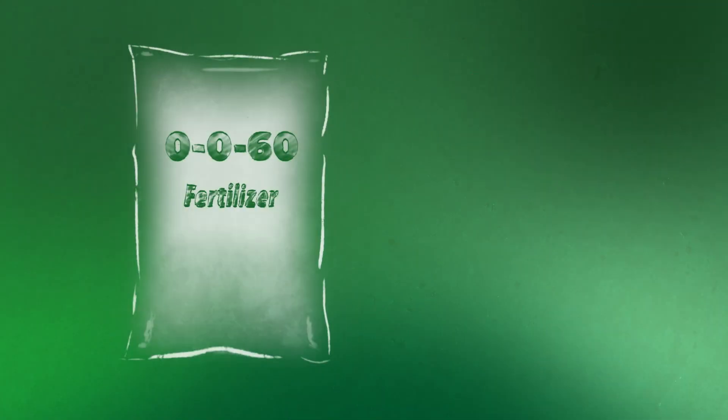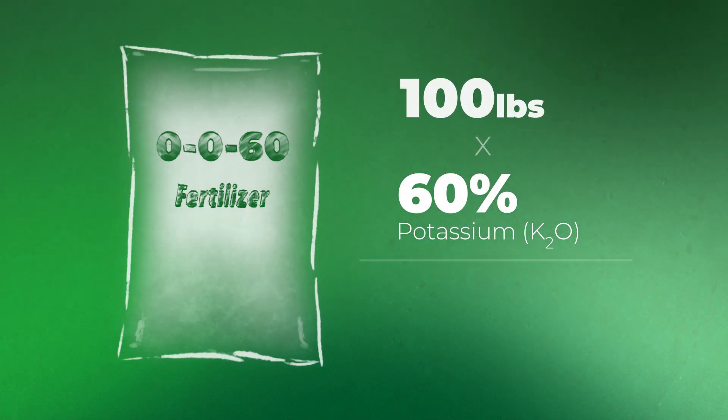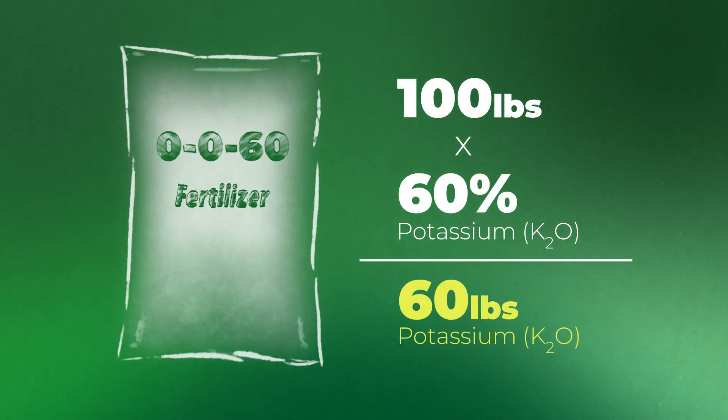In that example, there was no potassium — I used 11-52-0. What if I needed some potassium in my program? For example, if I used a 0-0-60, we're going to go through the exact same process. Using 100 pounds as an example, because that makes for easy math, we take that 60% and multiply that by 100 to get 60 pounds in that 100 pounds of product.